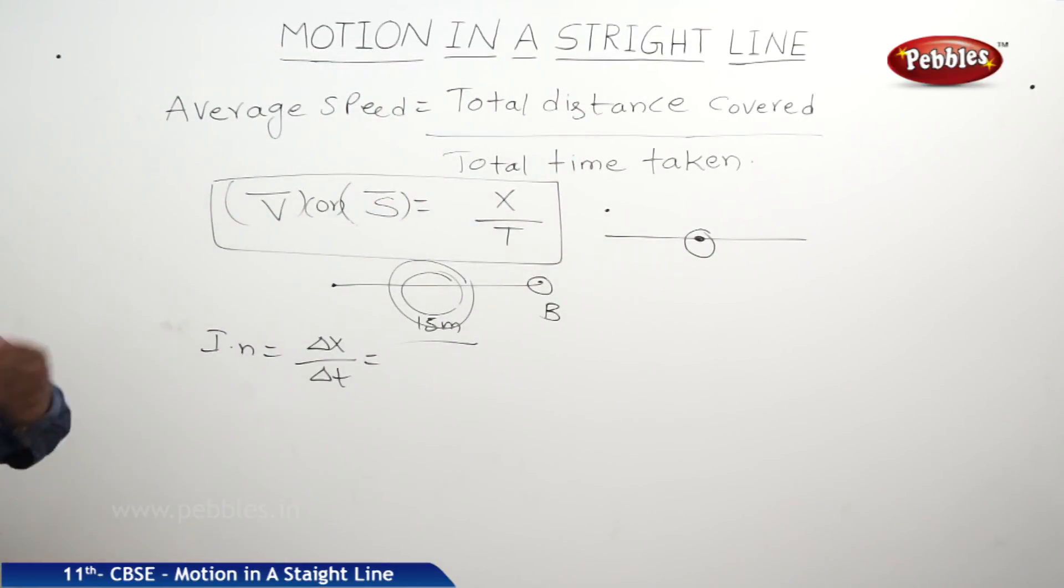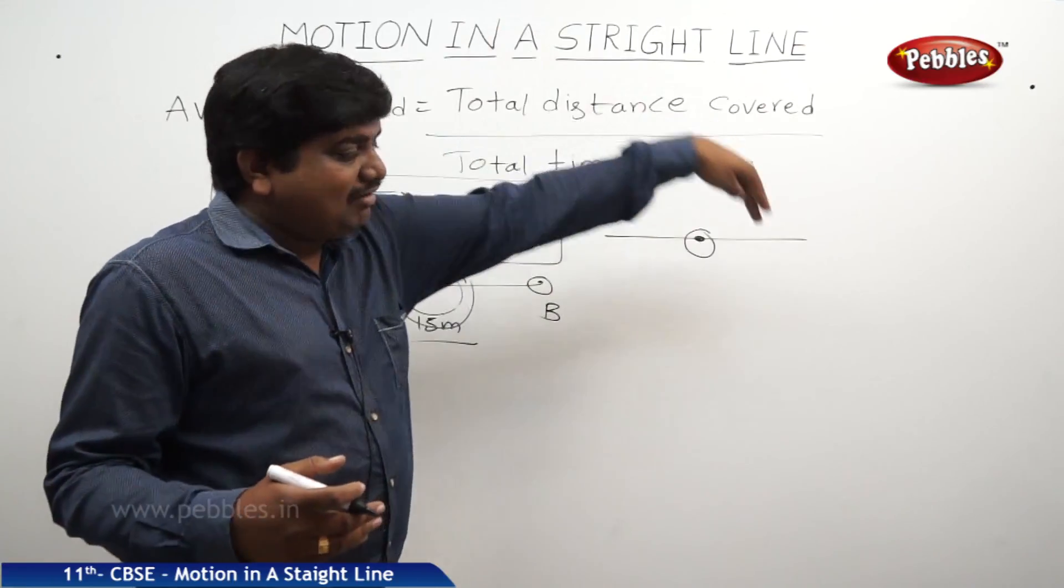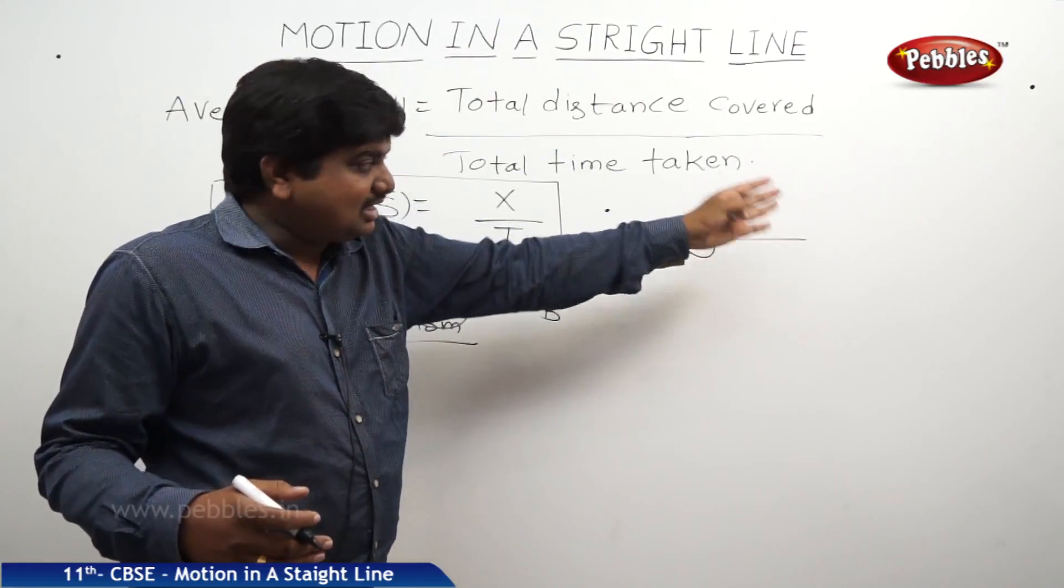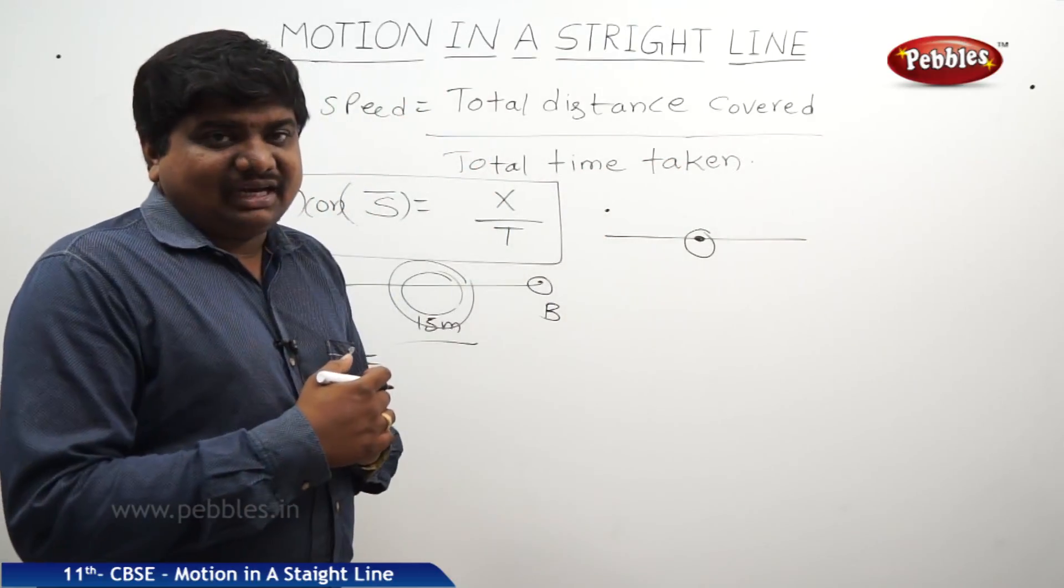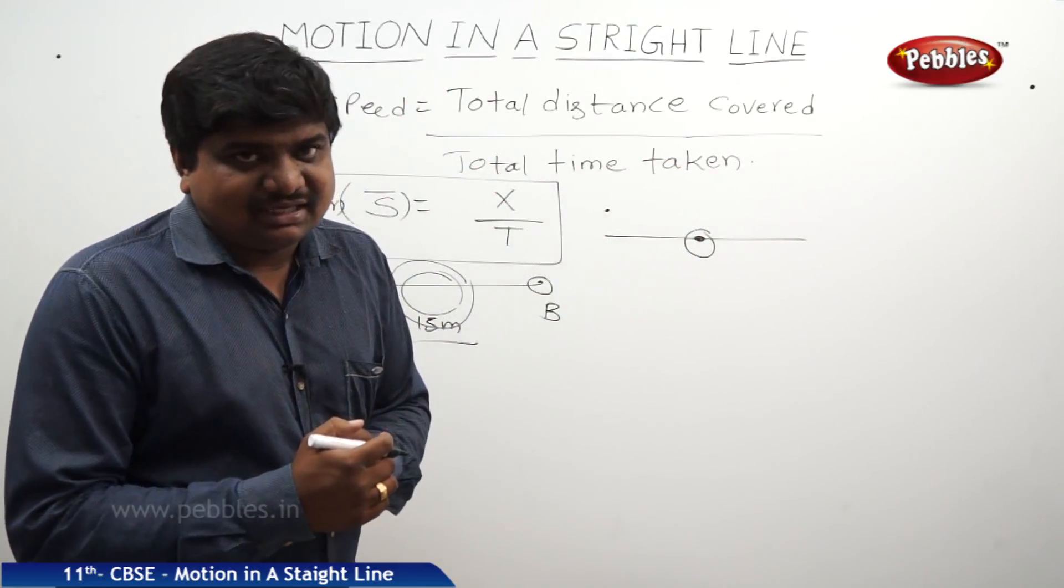That is said to be instantaneous. Instantaneous current. Means right now, what is the velocity? It may vary to the average velocity. It may change with the average velocity or it may change with the total velocity also. So that is the instantaneous velocity.